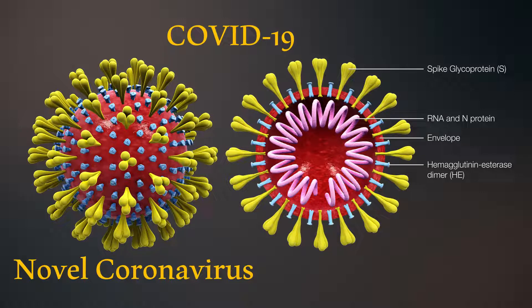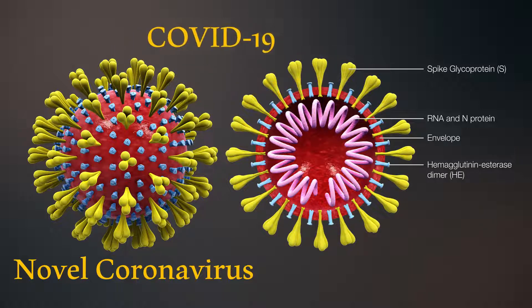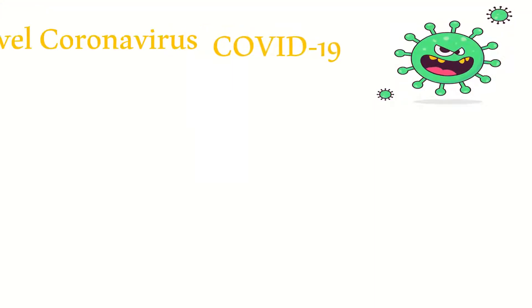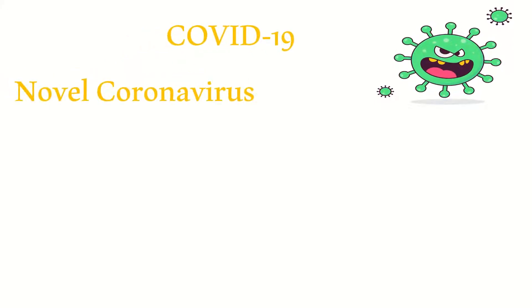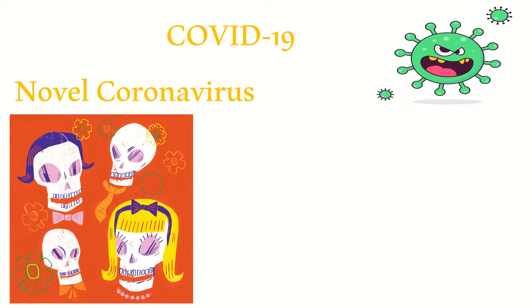COVID-19 is the disease known as coronavirus disease which came from a new species of virus known as novel coronavirus. This virus attaches itself to human cells through glycoproteins. Coronaviruses are a family of viruses that range from the common cold to SARS to MERS.